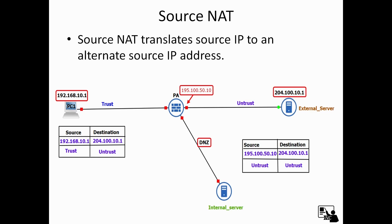This is the topology diagram to understand source NATing. Here we have PC1 with IP address 192.168.10.1, and it wants to connect with the external server at 204.100.10.1. This is the packet flow before source NATing — the source IP address is 192.168.10.1, the destination IP address is 204.100.10.1, the source zone is trust, and the destination zone is untrust.